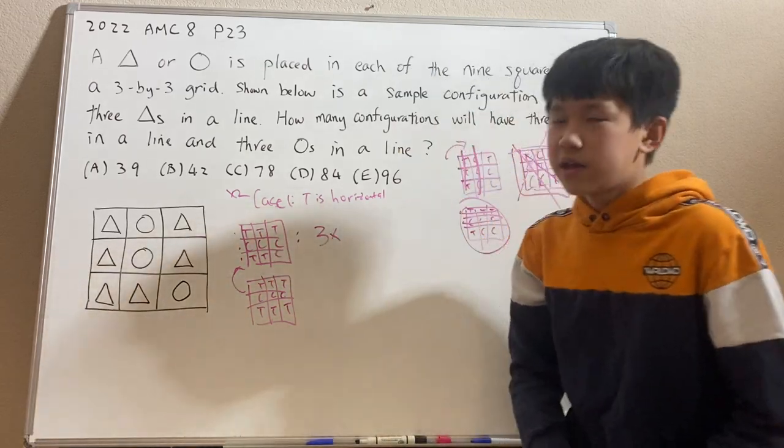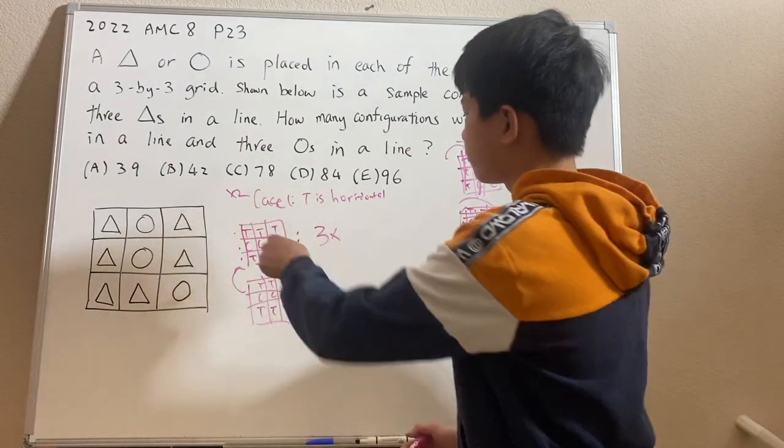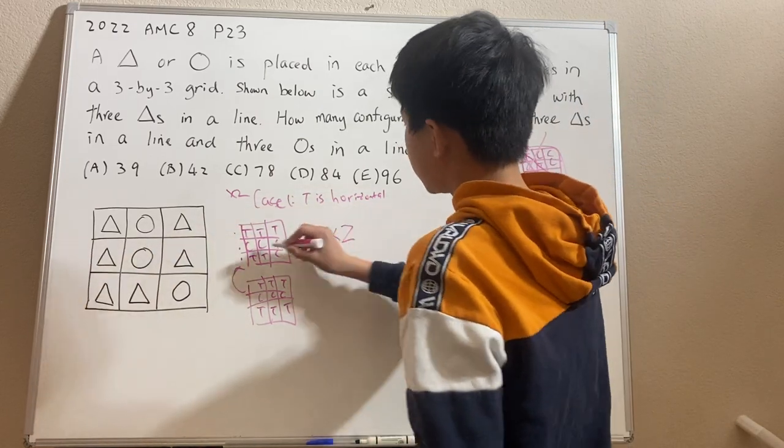And let's say T takes the top one. Now how many remaining rows are left for the Cs? Two, right? Because there are two remaining.